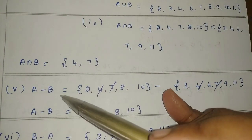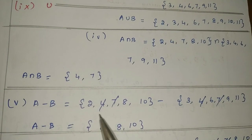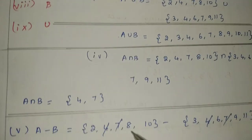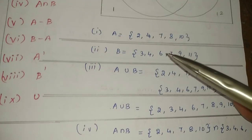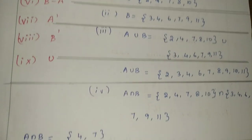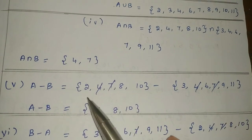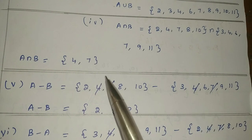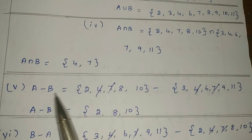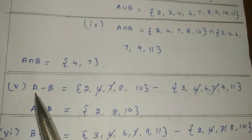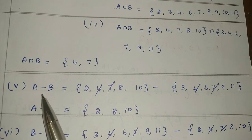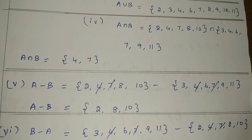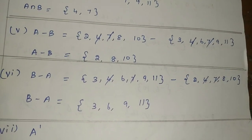Next, we need to do A difference B. A elements are: 2, 4, 7, 8, 10. B elements are: 3, 4, 6, 7, 9, 11. We cancel the common elements — 4 and 4, 7 and 7. The balance values remaining in A are: 2, 8, 10. So A difference B is {2, 8, 10}.